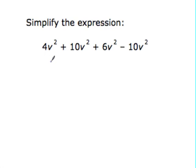Okay, these are all v squared terms. So 4 plus 10 plus 6 is 20 minus 10. 20 minus 10 is equal to 10. So our final answer is 10v squared.